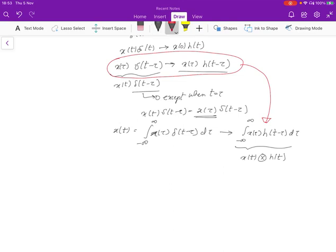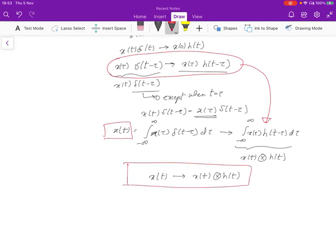Now we know something we didn't know before, which is that if the input is X(t), then it leads to X(t) convolved with h(t). This beautiful result says that for an LTI system, if you know what the impulse response is, which is h(t), then you can find out the response to any arbitrary input X(t) by simply convolving the input signal X(t) with the h(t).